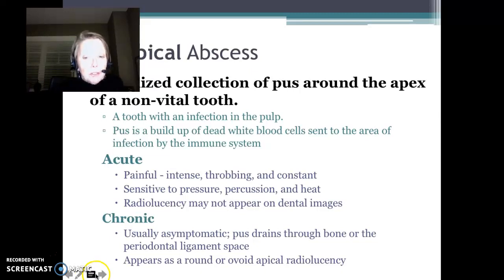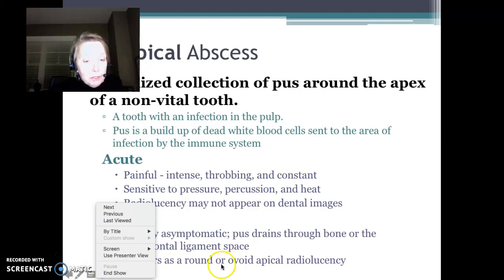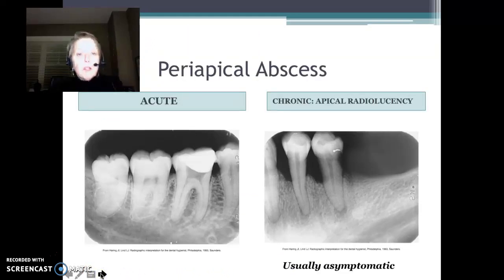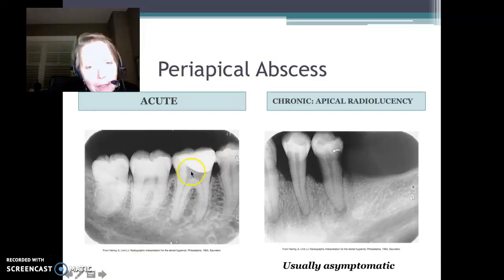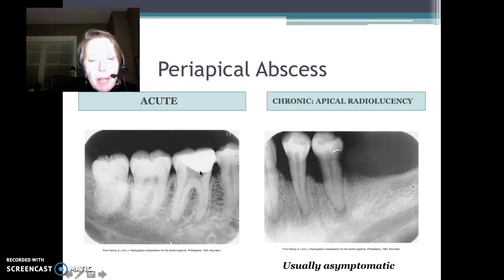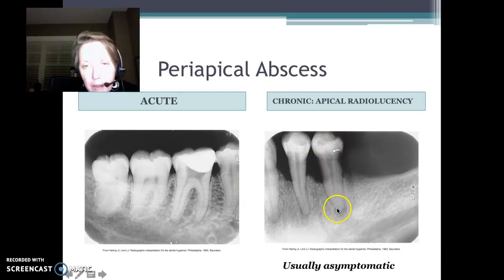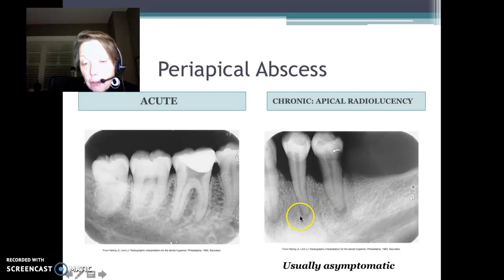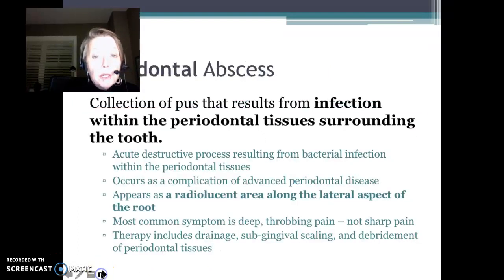With a chronic abscess, you'll see the radiolucency on the image. For an acute periapical abscess, take a look at tooth 30 — a really large restoration encroaching upon the pulp. The patient reports they can't chew on it, pain wakes them up at night, and hot soup or coffee is so painful and it lingers. For a chronic abscess, the patient is usually asymptomatic, but when you take the image, you're seeing the periapical radiolucency.